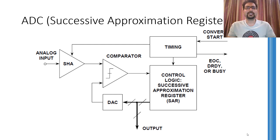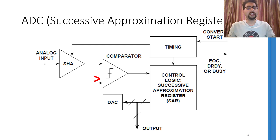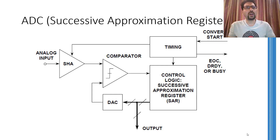No matter which is the case, the successive approximation register's value will be adjusted. If the analog input is sensed to be larger than the digital to analog converter output, the successive approximation register will increment its value. However, if the DAC output is larger than the analog input, the value in the successive approximation register will be decreased. Through this process, in every one cycle one bit will be checked.